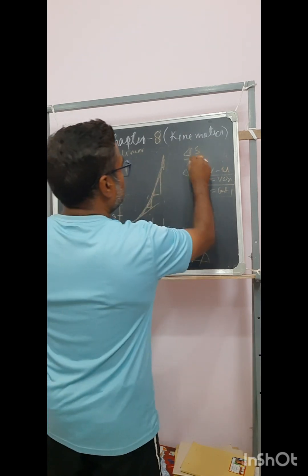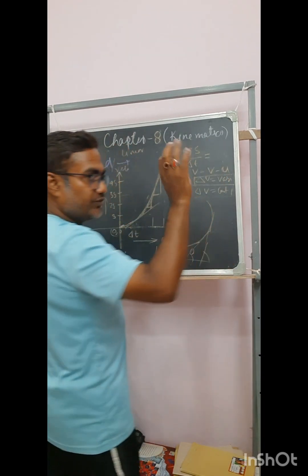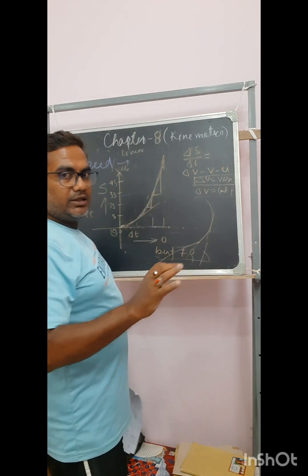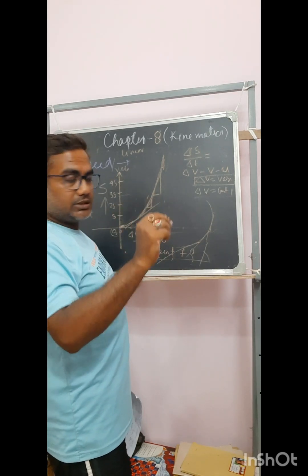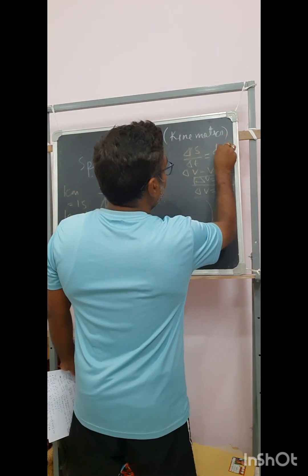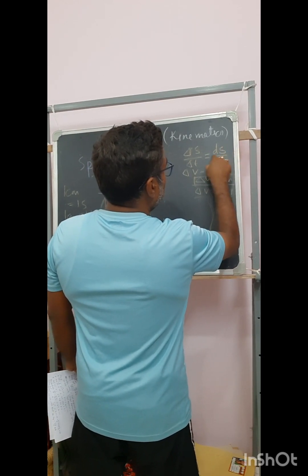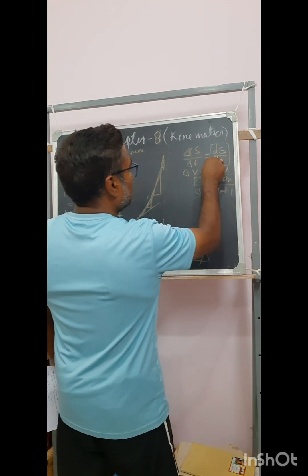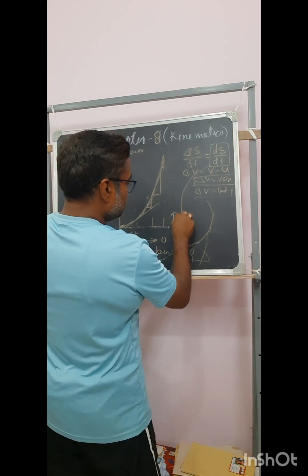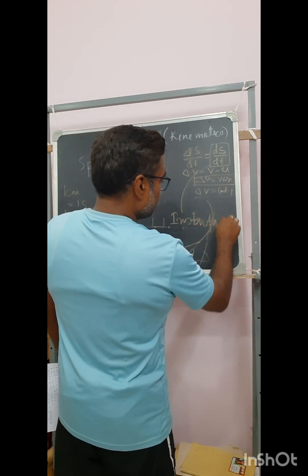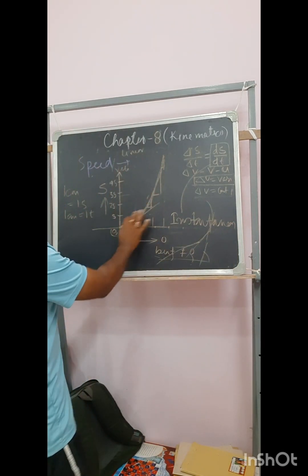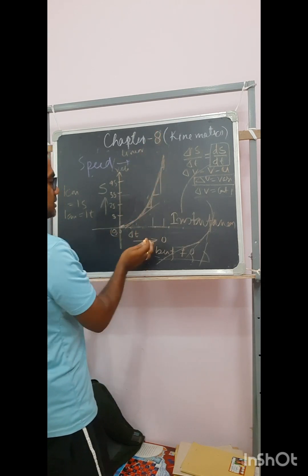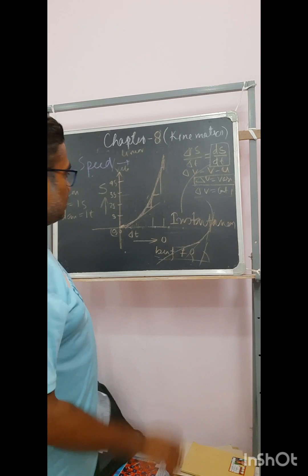If delta s and delta t approach infinitesimally small values, then every moment of time the velocity is changing, and that is denoted by the slope — delta s by delta t. So in every single point you get a tangent giving a different angle. This is called instantaneous velocity, denoted by the smallest possible delta s by delta t, which represents when the velocity is instantaneous.